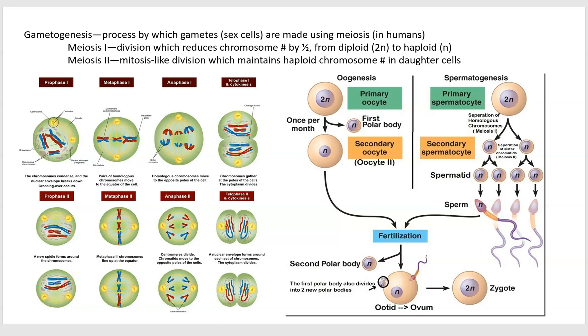In meiosis 1, you're going to go from diploid to haploid. You go from 46 to 23 chromosomes, and then in meiosis 2, you maintain that chromosome number all the way through.